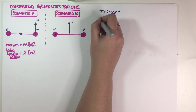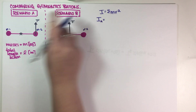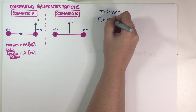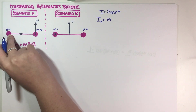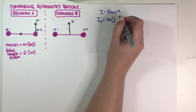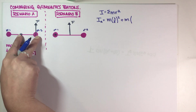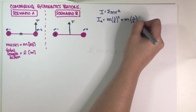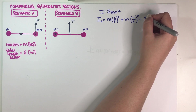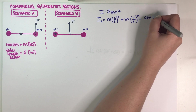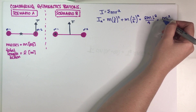Let's start with scenario A. The first mass m has a distance from the pivot of L/2, so we get m times (L/2) squared, plus the other mass m also at distance L/2, squared. This equals 2 times L squared divided by 4, which gives us I_A equals ML squared divided by 2.